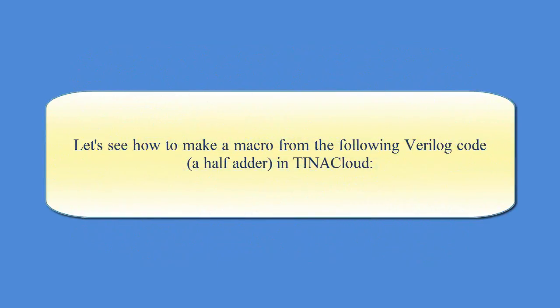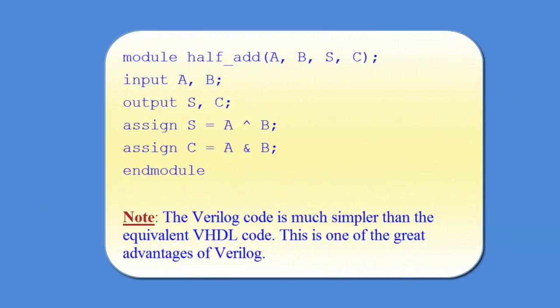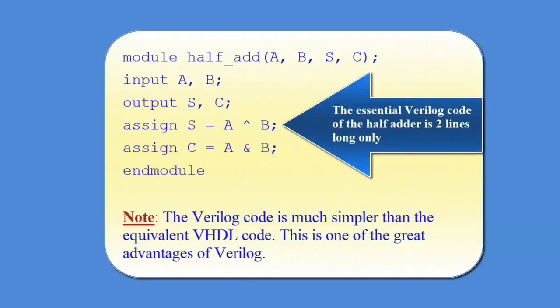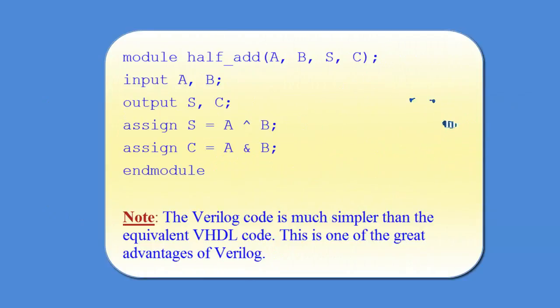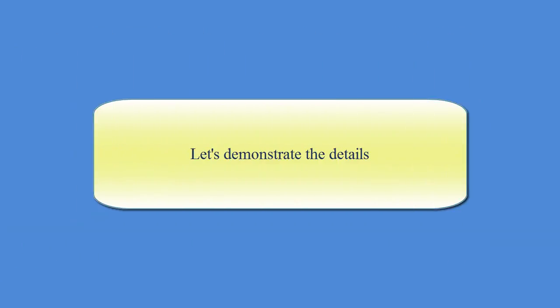Let's see how to make a macro from the following Verilog code, a half adder in Tina Cloud. Note the Verilog code is much simpler than the equivalent VHDL code. This is one of the great advantages of Verilog. The essential Verilog code of the half adder is two lines long only. Let's demonstrate the details.